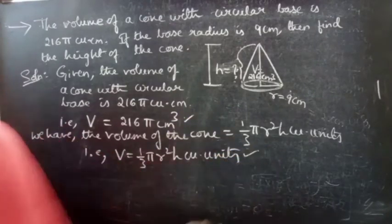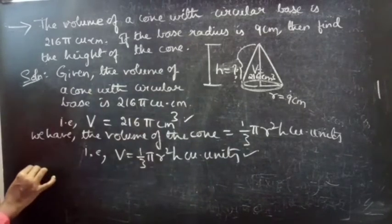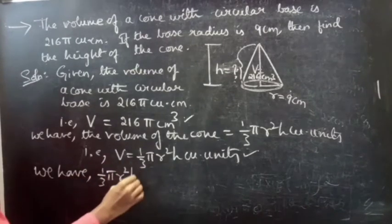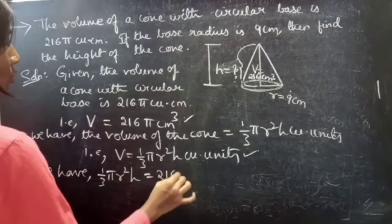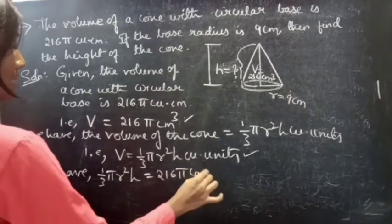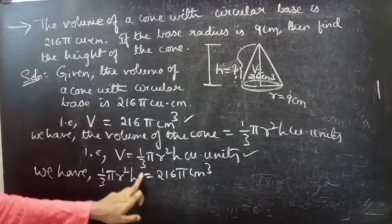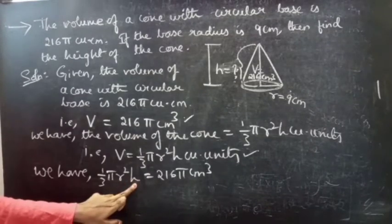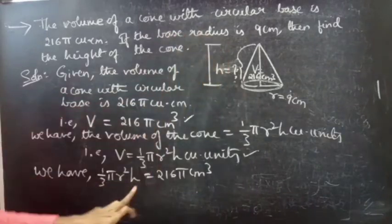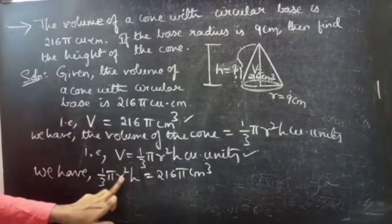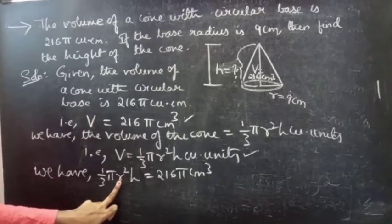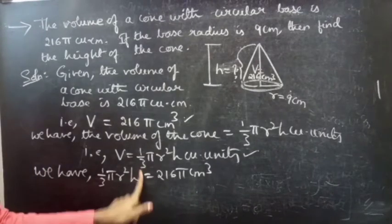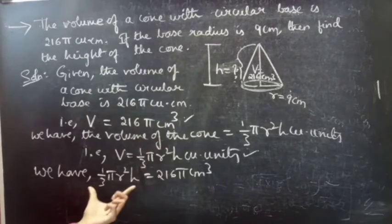So we have 1 by 3 pi r square h equals to 216 pi centimeter cube. Here I have not mentioned any units because we are going to substitute the values of r and h. H is unknown, so leave h and we are going to write the value of r, from there we will get the units.